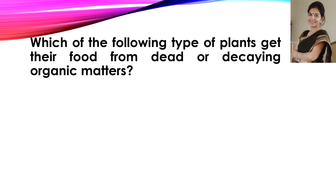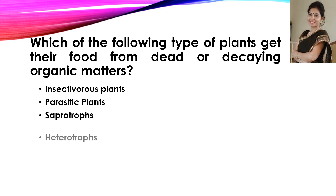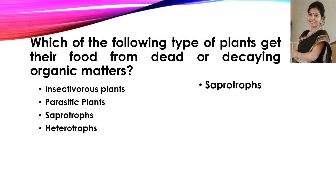Now the next question: which of the following types of plants get their food from dead or decaying organic matter? The correct answer is saprotrophs — examples include mushrooms, fungi, etc.